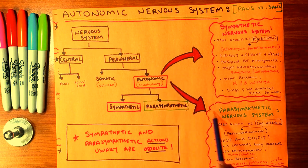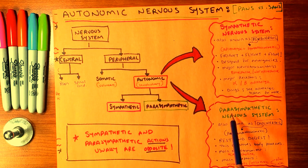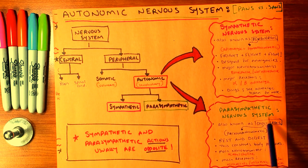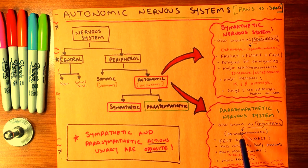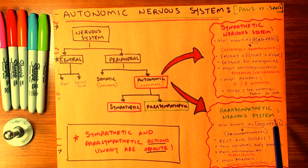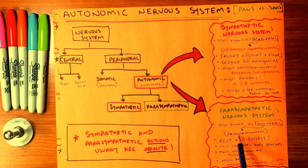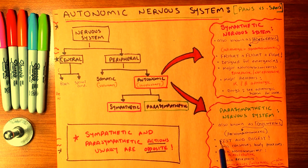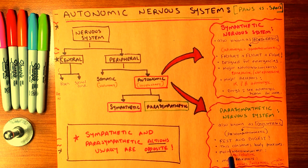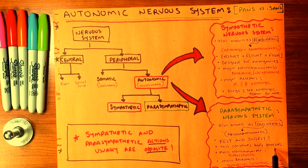The second half of the autonomic nervous system is the parasympathetic nervous system. It is also known as the cholinergic — to be precise, the cholinergic is known as the parasympathomimetic system. It is for rest and digest, as it conserves all body processes.